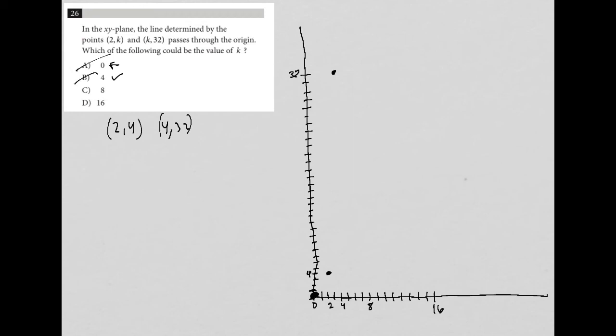How about 8? So 8 would get me to (2,8). I'm sorry, choice C would get me to (2,8) and (8,32). So (2,8) is here, 5, 6, 7, 8. So that'd be there. And (8,32), again, pretty straight there. So it would be here. That actually looks pretty good, for going through the origin. So I like that one.